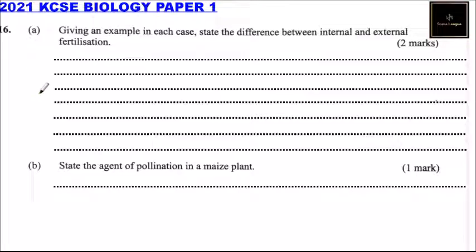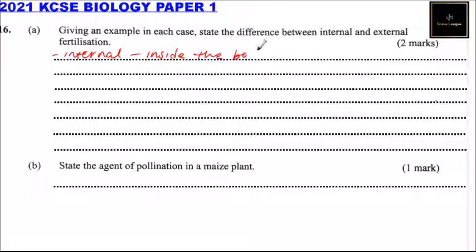Question number 16: giving an example in each case, state the difference between internal and external fertilization. Internal fertilization happens inside the body, for example in mammals and reptiles.